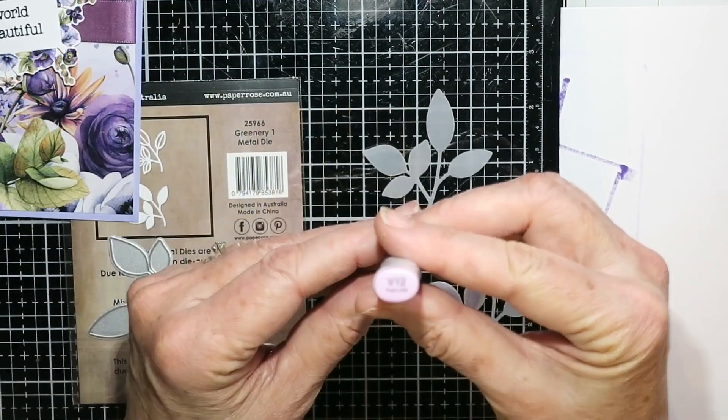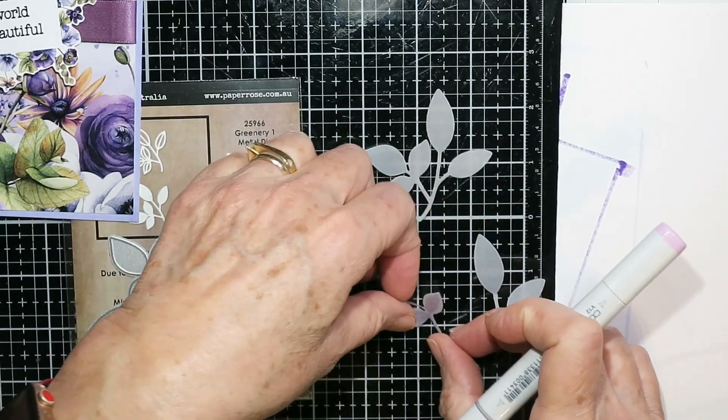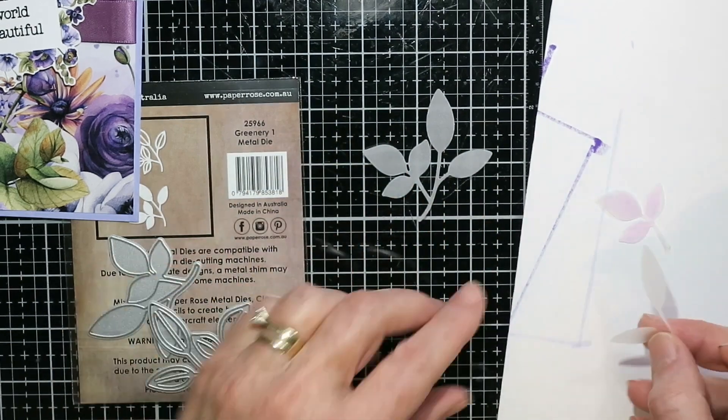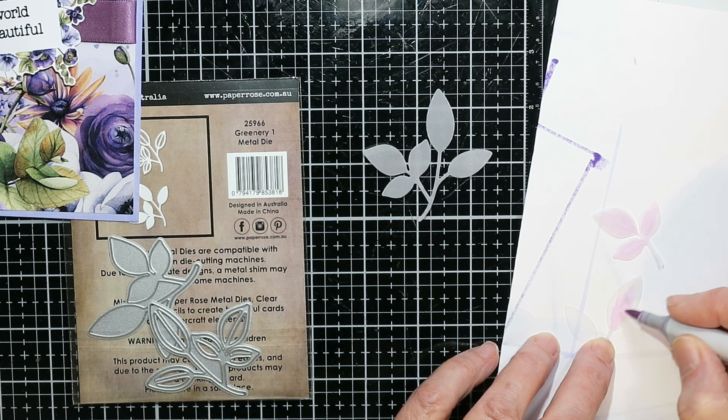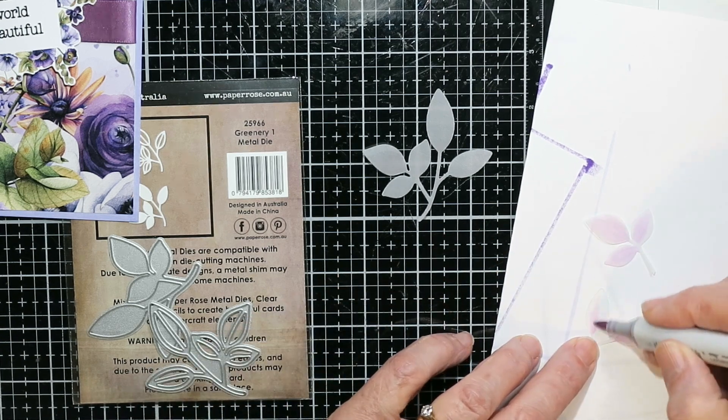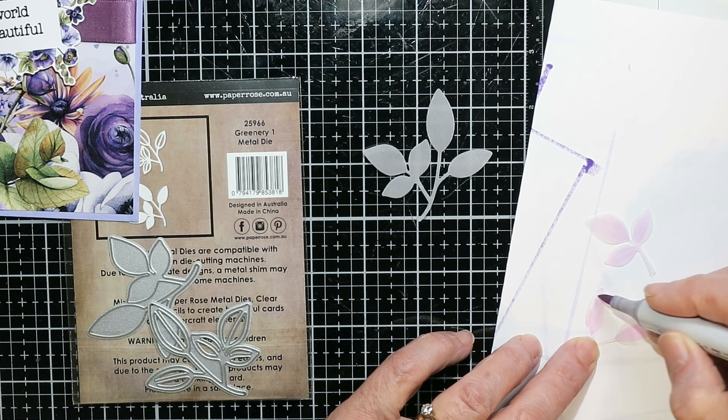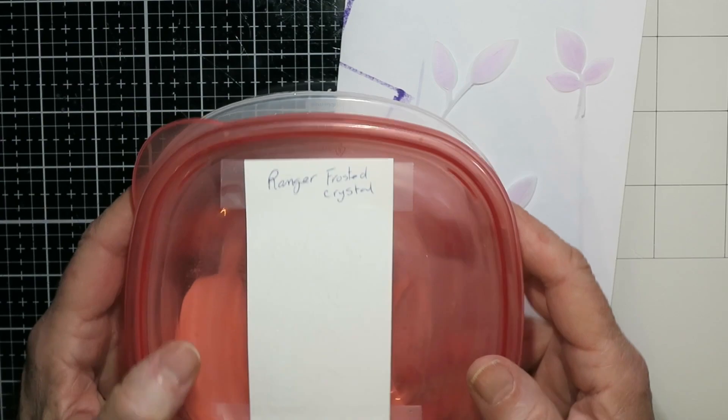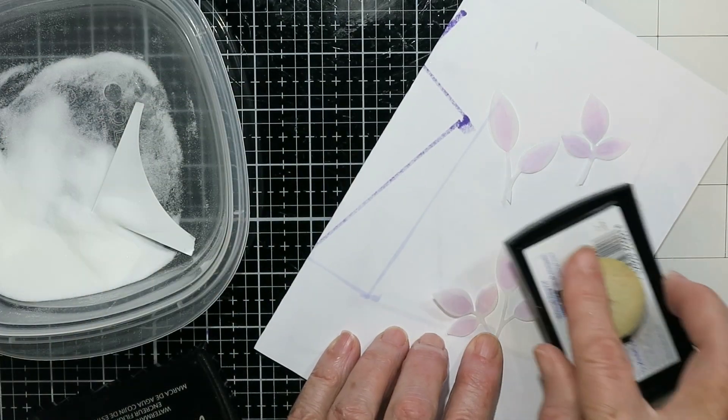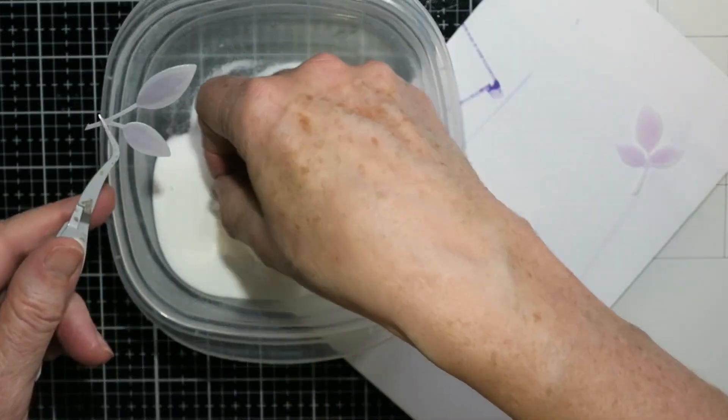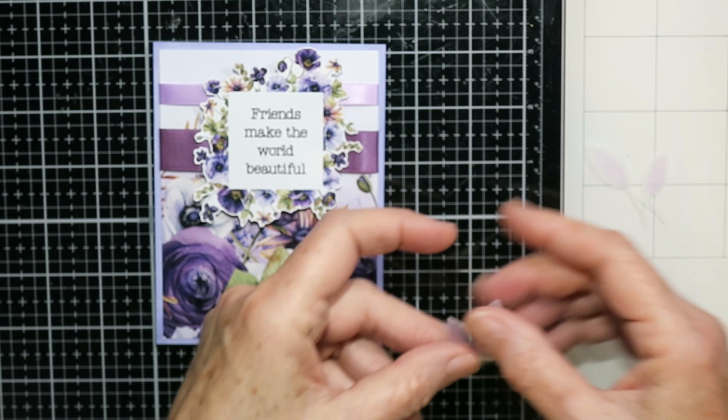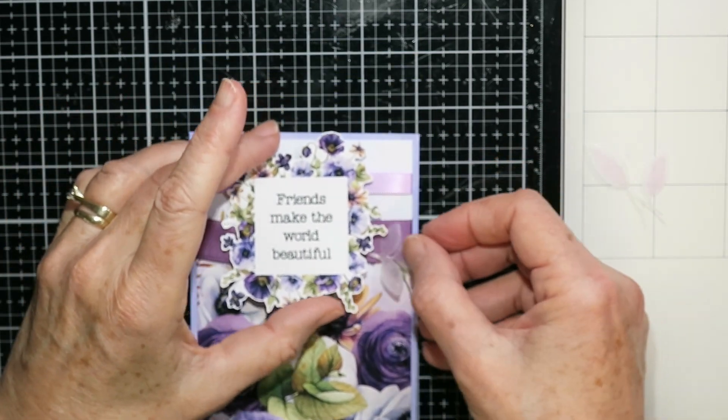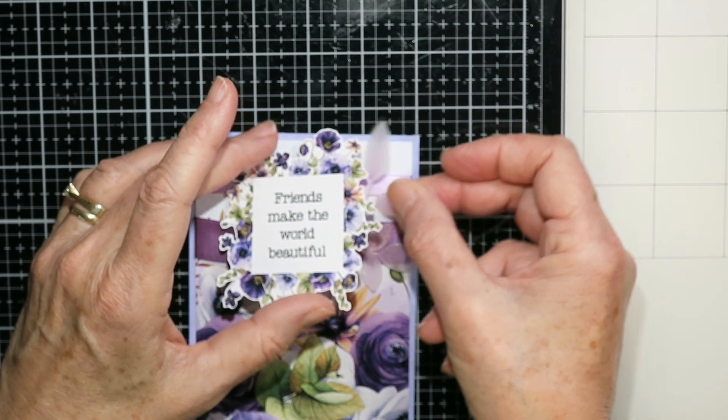Here I'm using the Greenery 1 metal die. I've cut those leaves out of vellum. And just to give a little bit of color, I am using a copic marker on the back side of these. And you can see I'm just flicking a little color just down the center of the leaves, not out to the edges even. And then on the front, I have this Ranger Frosted Crystal Embossing Powder. I've had this for a long time, so I don't even know if it's available or not. But it gives a very pretty sparkly kind of finish. So I just covered the front of all the leaves with that.